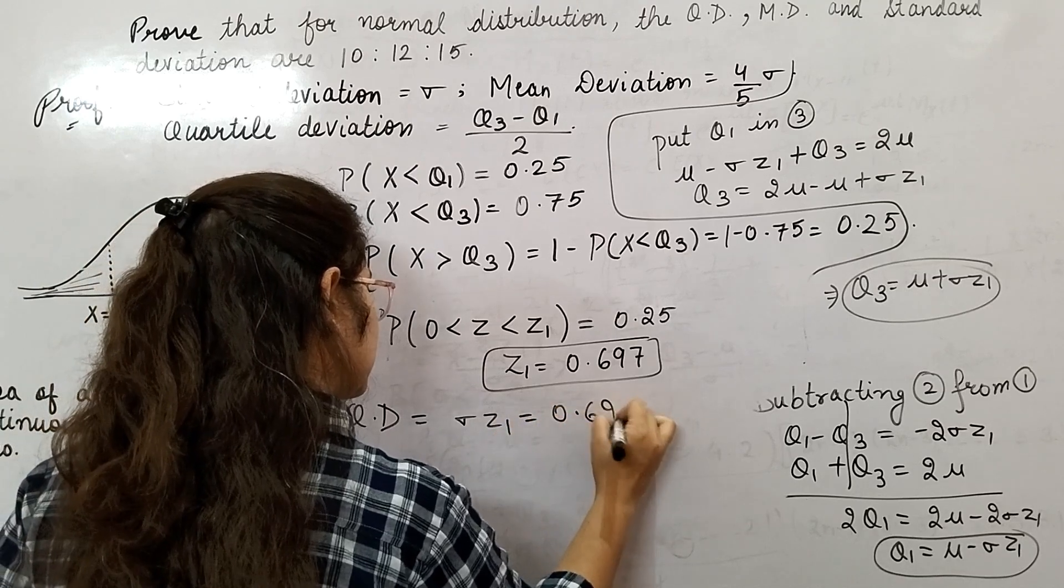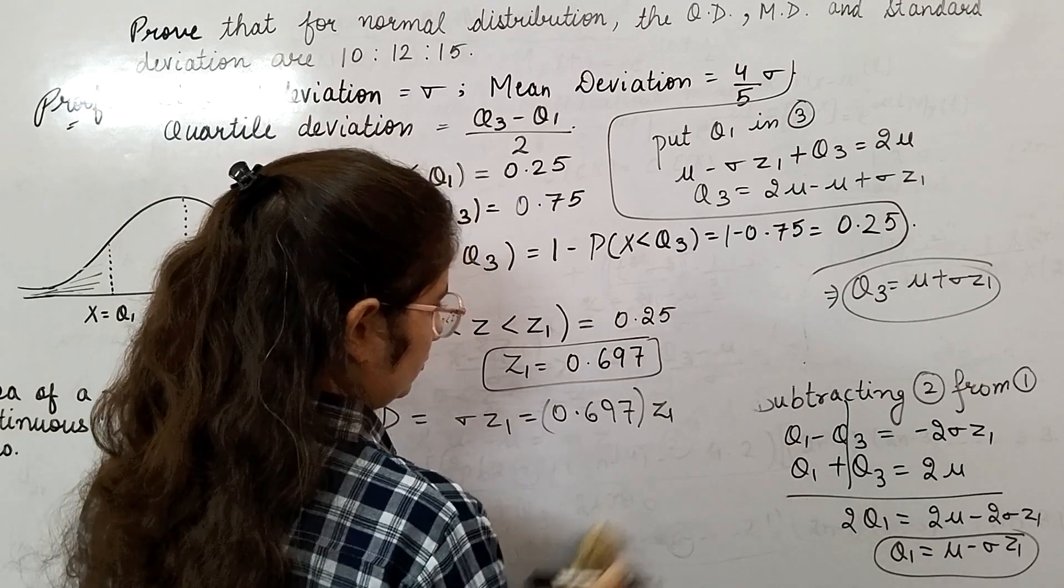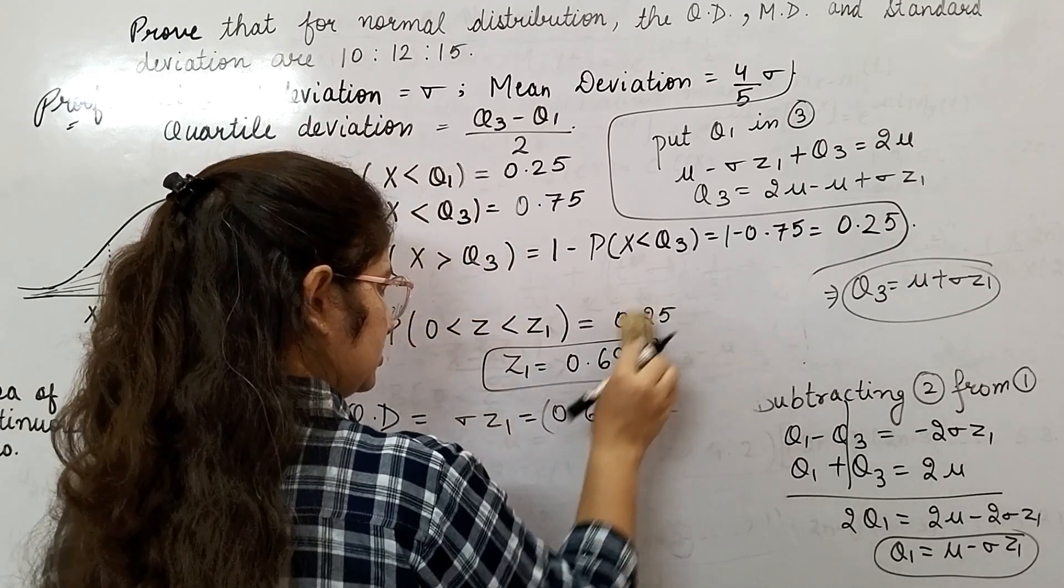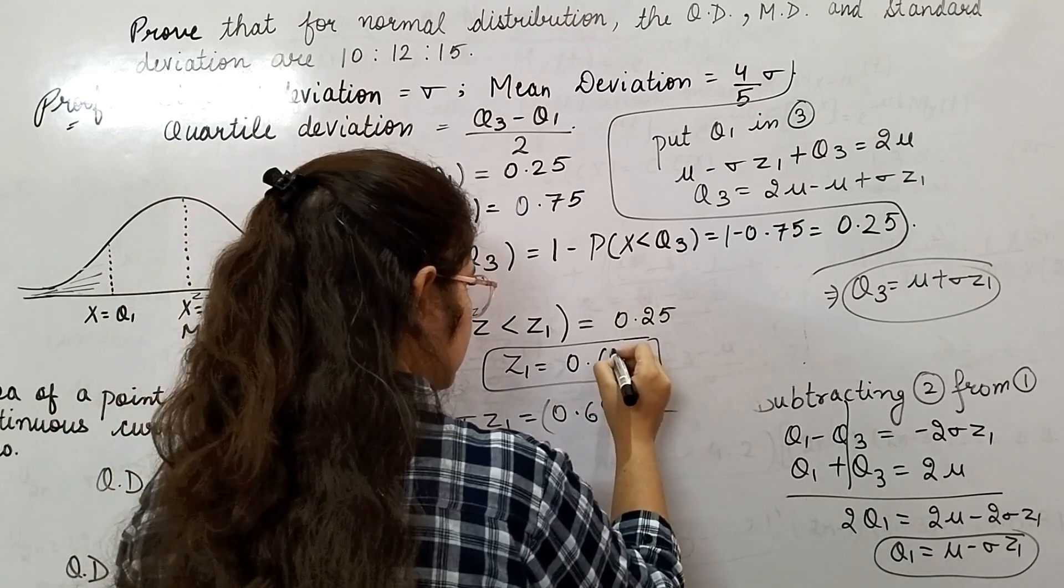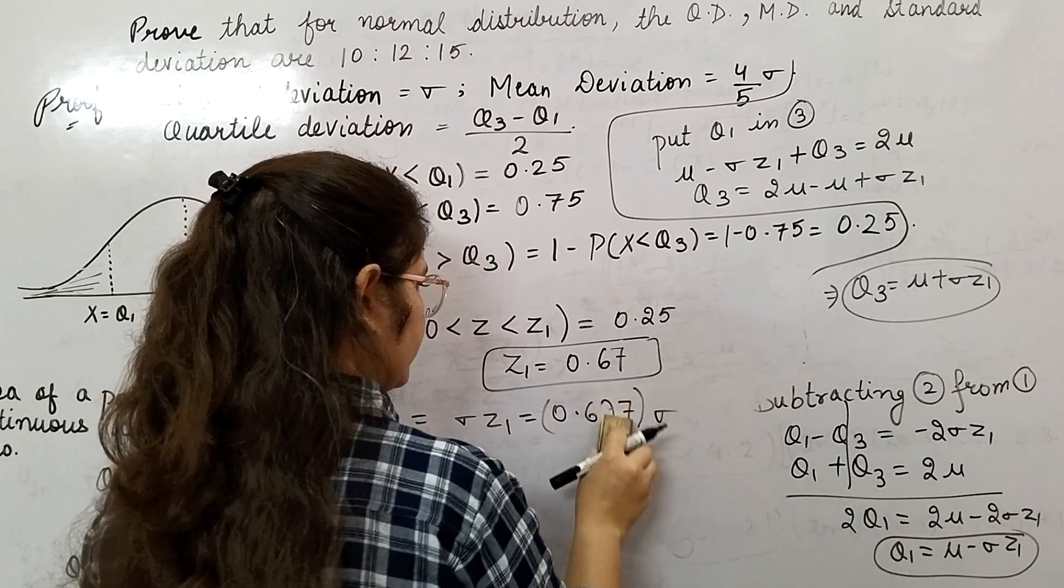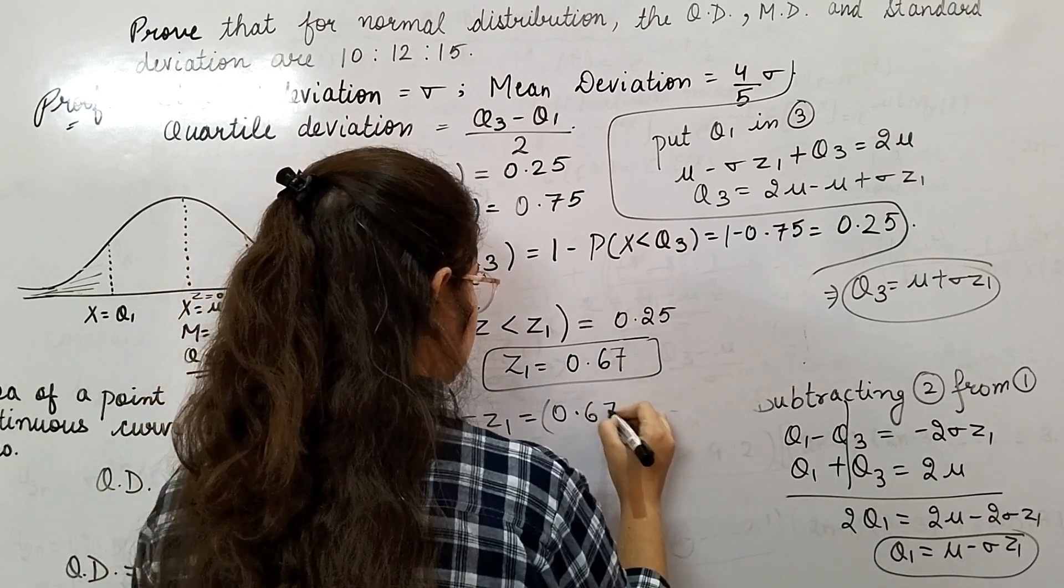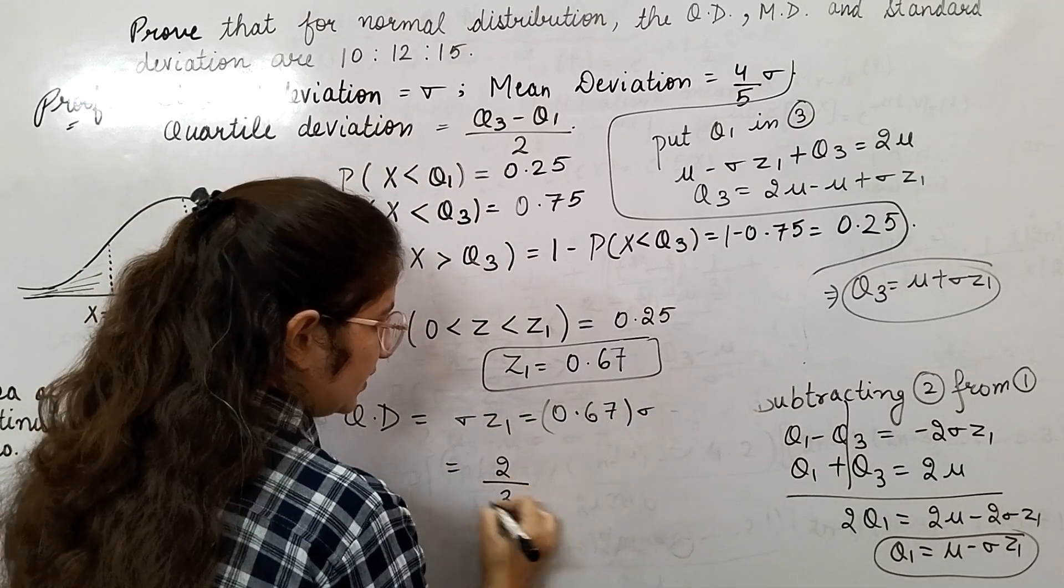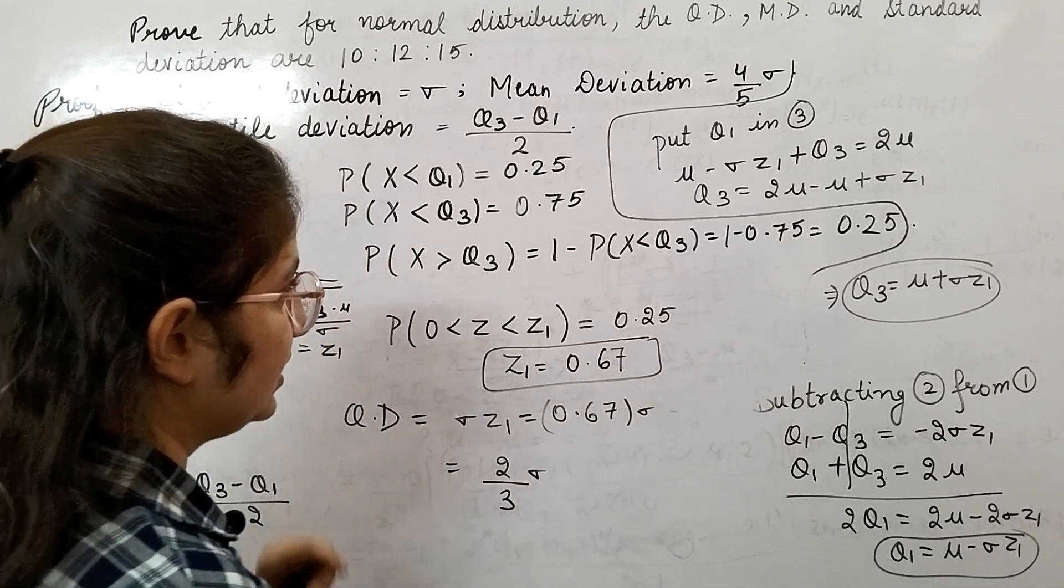From here, what you calculated for quartile deviation? Sigma z1, so 0.67 sigma. Wait, not z1—it is sigma. And this is not 697, it is 67. 0.67 sigma can be written as 2 divided by 3 sigma.